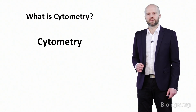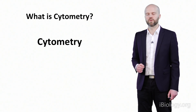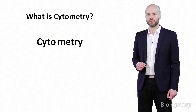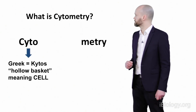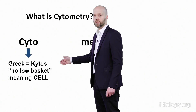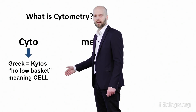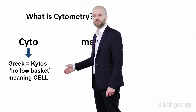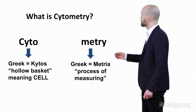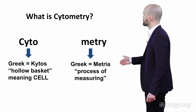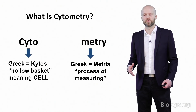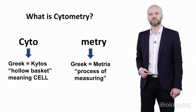Let's begin with the word cytometry. It's made from two words. The first is the Greek word kytos, which means hollow basket — in this case we're using it to refer to the word cell. The other half comes from another Greek word, metria, which means the process of measurement. So we can broadly define cytometry as the process of cell measurement.